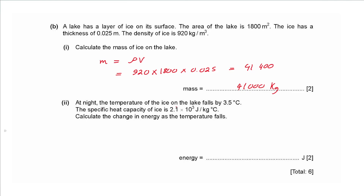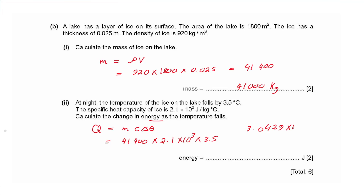Part ii: at night the temperature of the ice falls by 3.5 °C; specific heat capacity of ice is 2.1 × 10³ J/(kg·°C). Calculate the change in energy. Using Q = mcΔθ: 41 400 × 2.1 × 10³ × 3.5 = 3.0429 × 10⁸ J, approximately 3.0 × 10⁸ J.